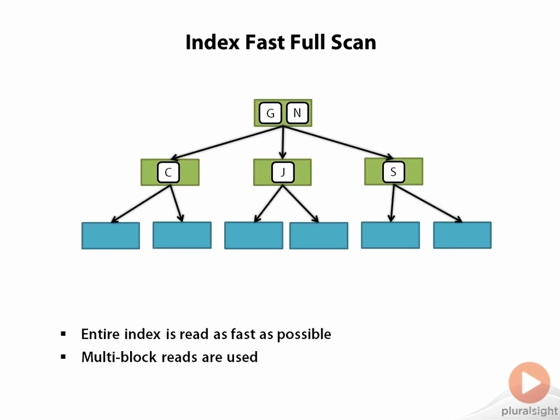Since an index contains only a subset of the columns in the table, it will consume fewer blocks on disk than what the full table does. So Oracle is using that to its advantage in reading the index because this saves I/O operations over performing a full table scan.